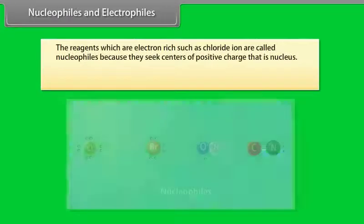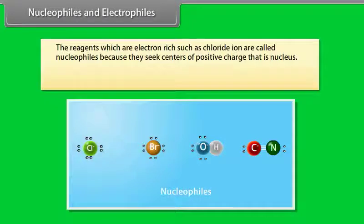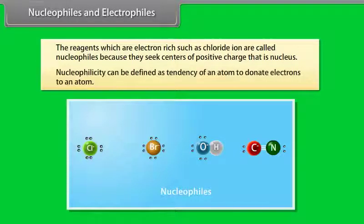Nucleophiles: reagents which are electron rich, such as chloride ion, are called nucleophiles because they seek centers of positive charge, that is, the nucleus. Nucleophilicity can be defined as the tendency of an atom to donate electrons to another atom.